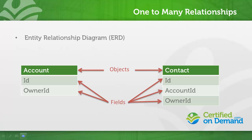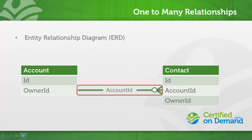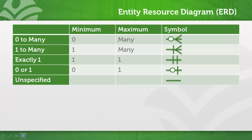One or more objects are followed by some or all of each object's fields. Lines show the relationship between objects, and the symbol at each end of the line describes the relationship. The symbol is used to describe the minimum and maximum number of associated records.